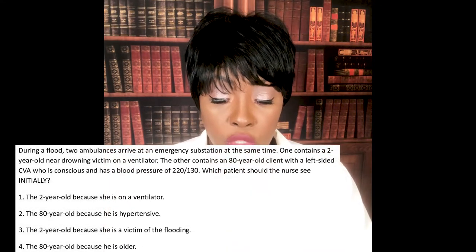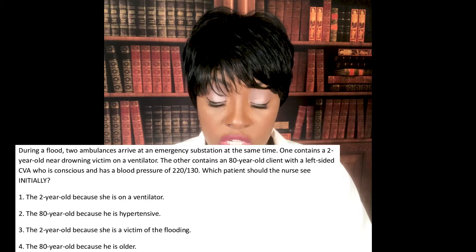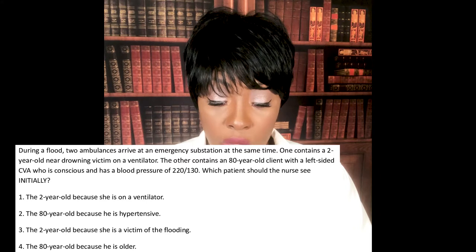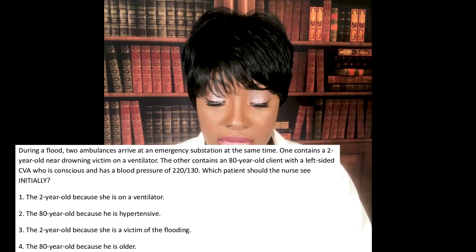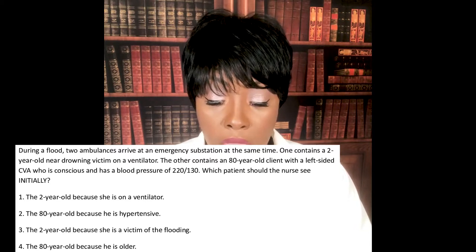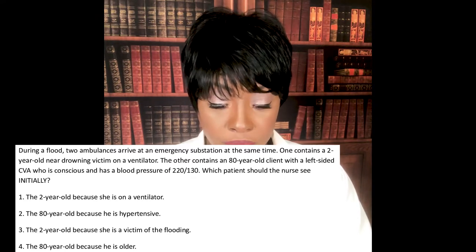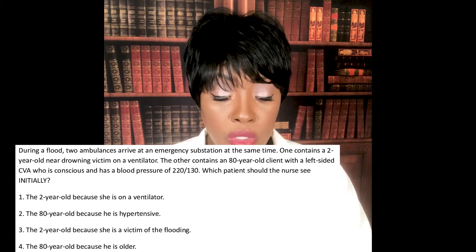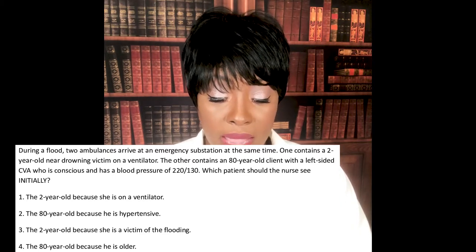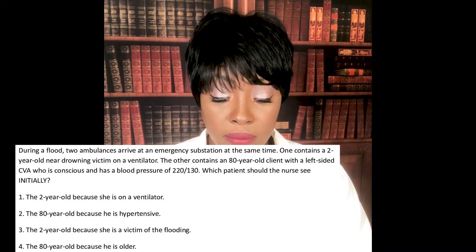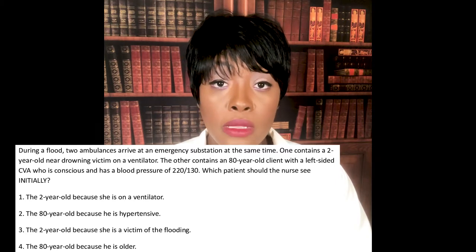Next question: During a flood, two ambulances arrive at the emergency substation simultaneously. One contains a two-year-old near-drowning victim on a ventilator; the other contains an 80-year-old client with a left-sided CVA who is conscious with a blood pressure of 220 over 130. Which patient should the nurse see initially? One, the two-year-old because she's on a ventilator; two, the 80-year-old because he's hypertensive; three, the two-year-old because she's a flood victim; or four, the 80-year-old because he's older.